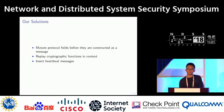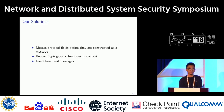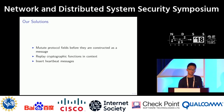Luckily, we have the following insights to tackle these problems. Our solution to the first challenge is to directly mutate protocol fields before they are constructed as a whole message — naturally achieving protocol-guided fuzzing. Secondly, we replay crypto functions in context, so we do not need to extract or re-implement them. For the third challenge, we insert heartbeat messages to detect whether the device is still alive — a valid message that periodically inquires about the device's status.